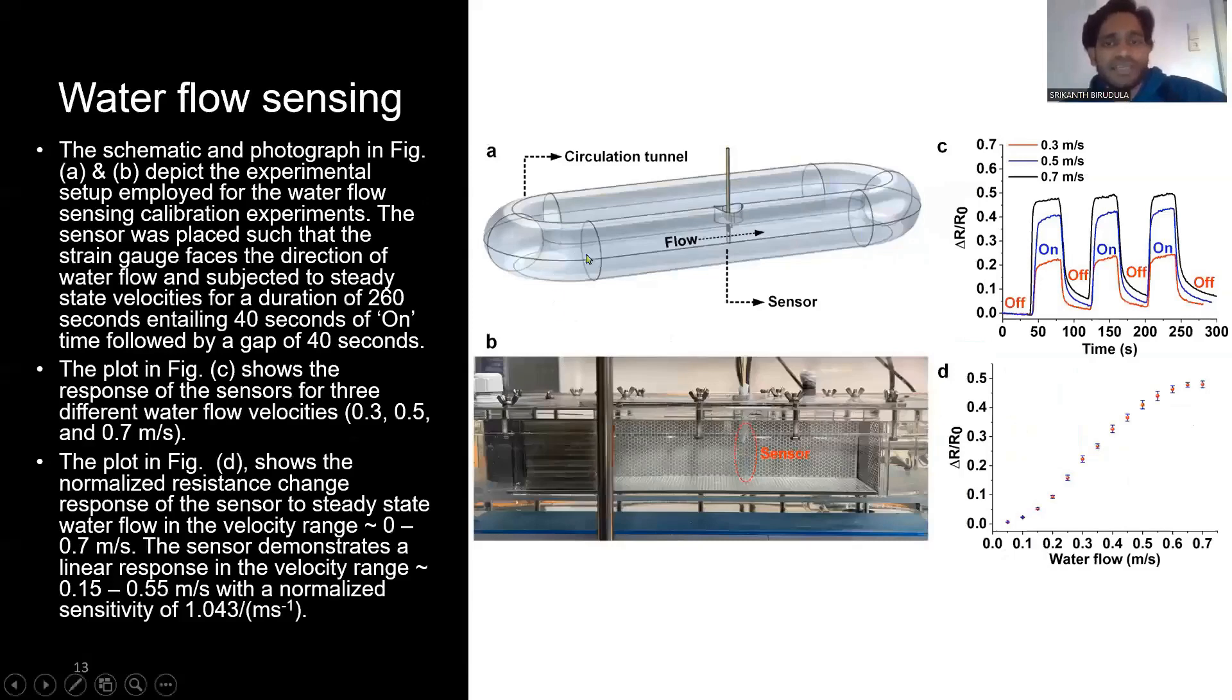Later, we checked the water flow sensing mechanism with the sensors. In figures A and B, we demonstrated our setup. In figure B, you can see the real experimental setup where the sensor is fully integrated inside the water. We measured flow sensitivity in water with 40-second intervals on and off at various steady-state flow velocities from 0.3, 0.5, and 0.7 m/s.